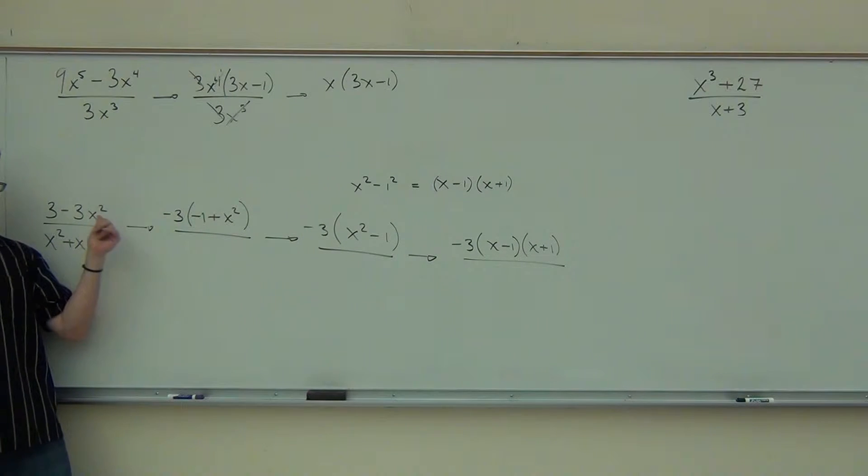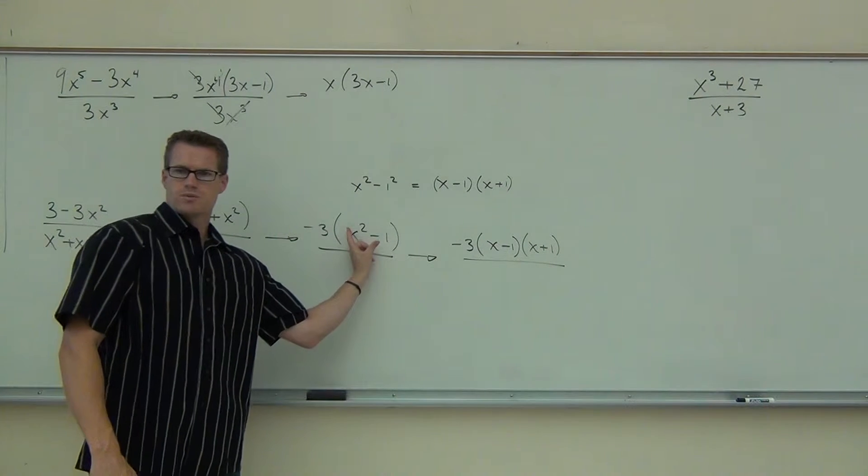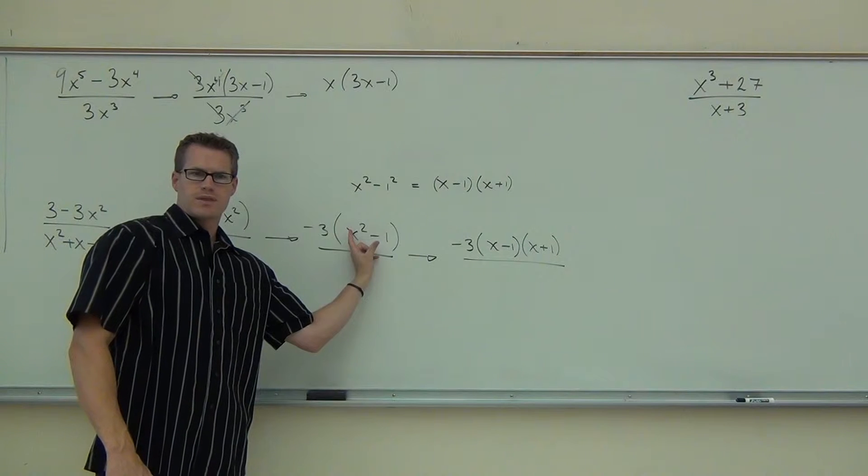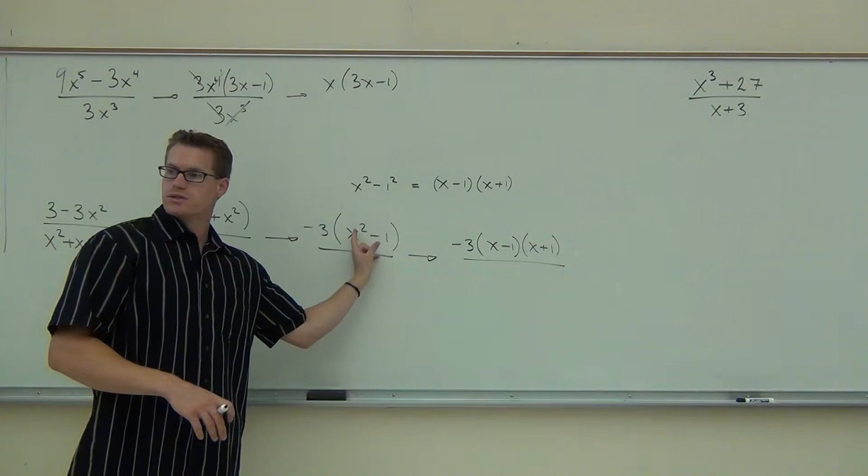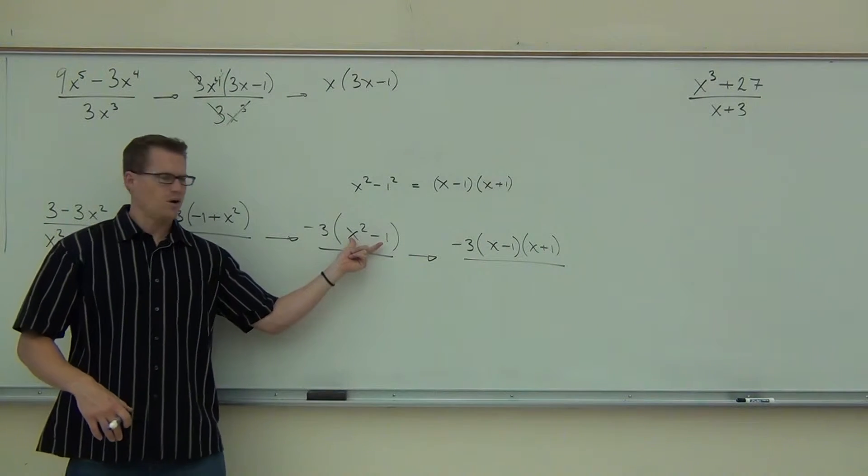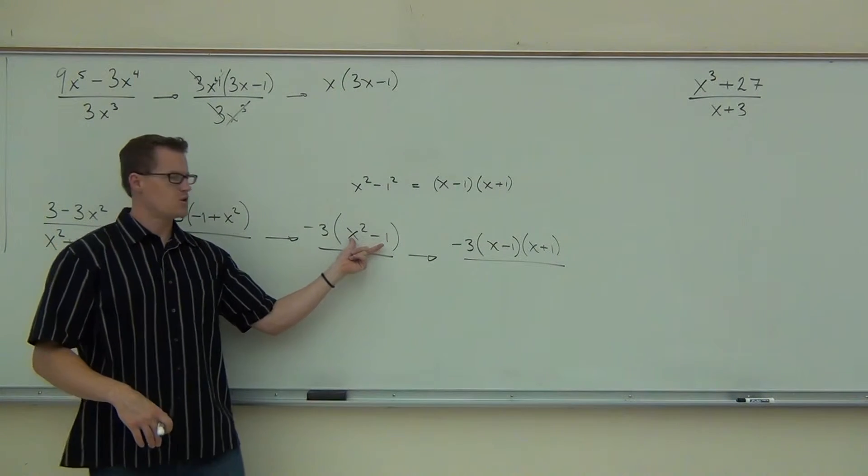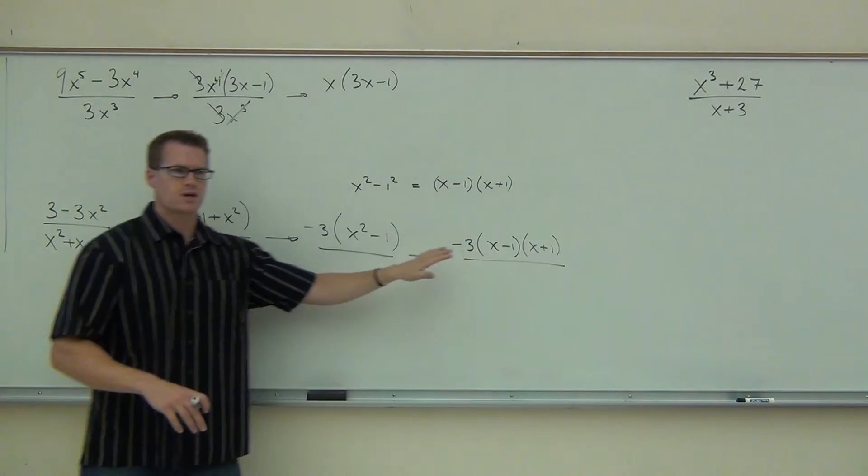Do you see why we're doing this? Do you see why we're factoring out a negative? Because this term with the large exponent is negative. We want to factor that out. Can you see why we're switching those two terms around? We want to write that in the correct order. We want to write the x squared first. That way we can factor it easier. Because when you see this, that eventually will be easy for you to factor.